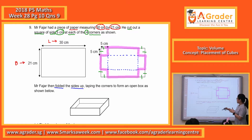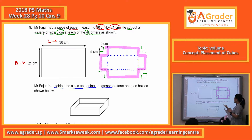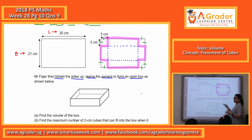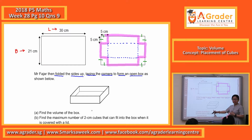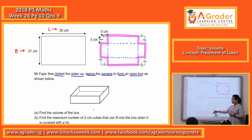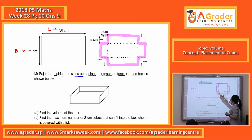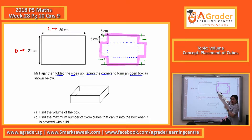After folding up, what he did is he taped the corner to form an open box, as shown over here. He pulled all this, then he taped this side together. These two parts, tape it together, you get the box.